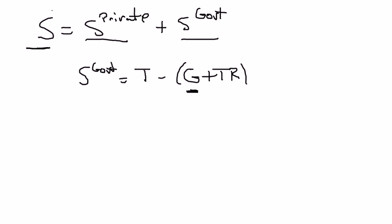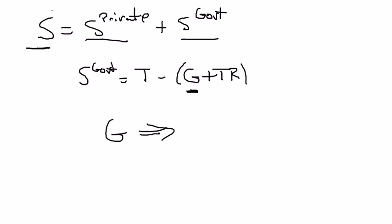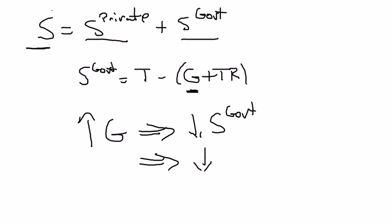Also, if you talked about a permanent decrease in taxes — whether it's corporate or personal income taxes or what have you — you'd get similar results. So our example is going to be an increase in government spending, which leads to a decrease in government savings, which causes a decrease in national savings. So we're starting off here with a decrease in national savings.